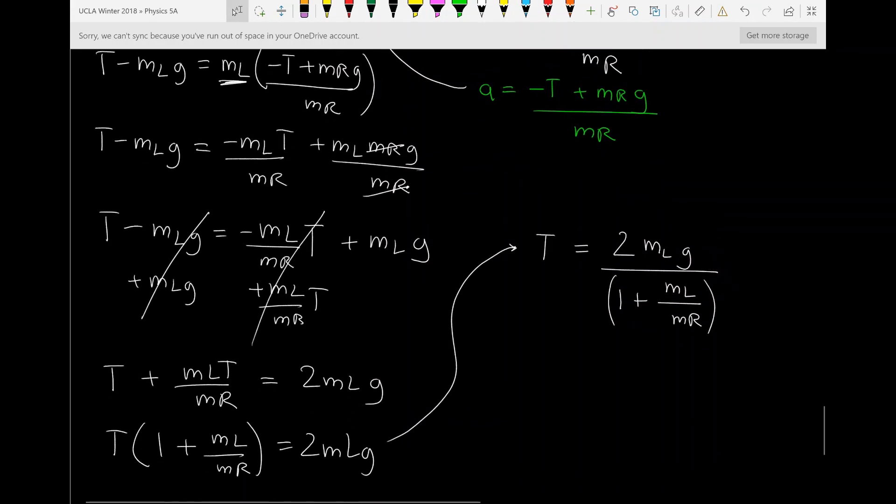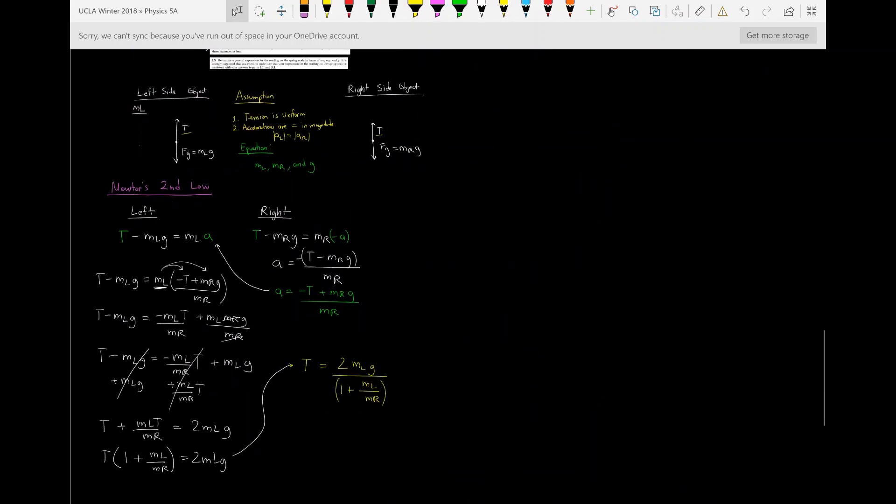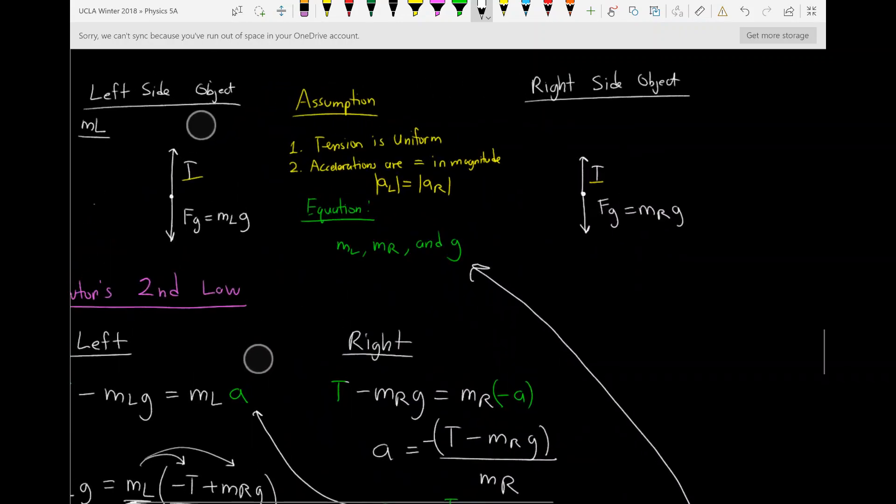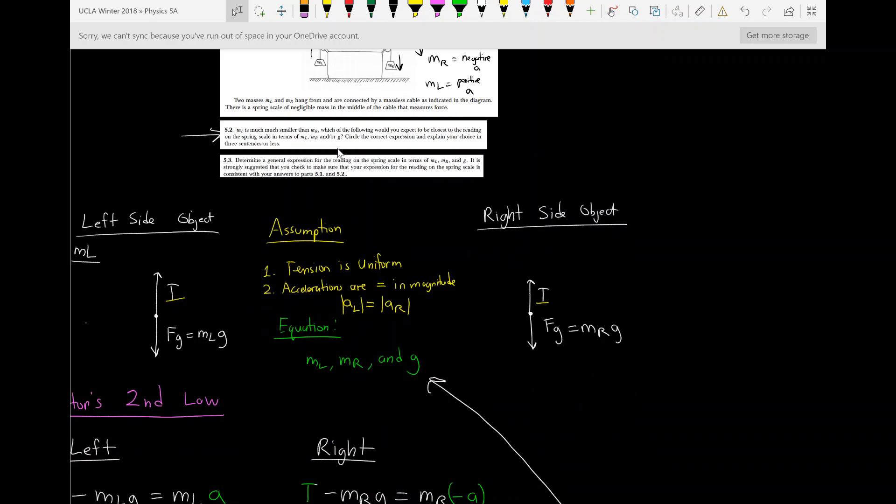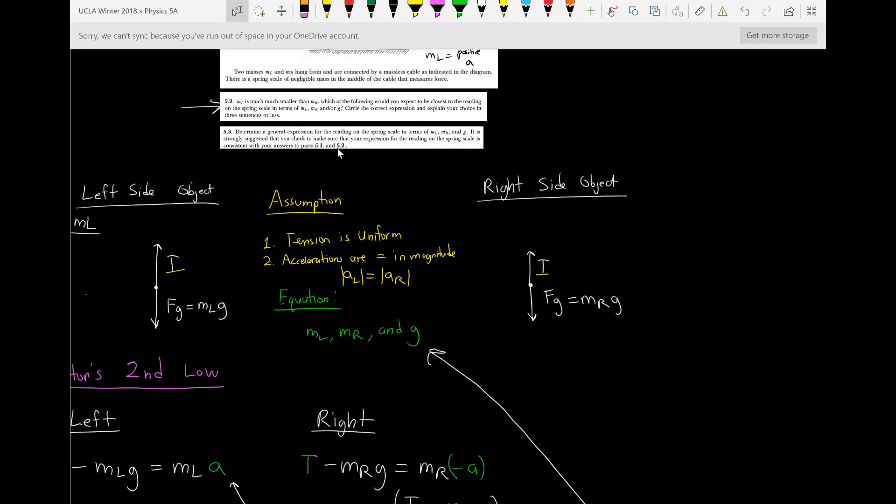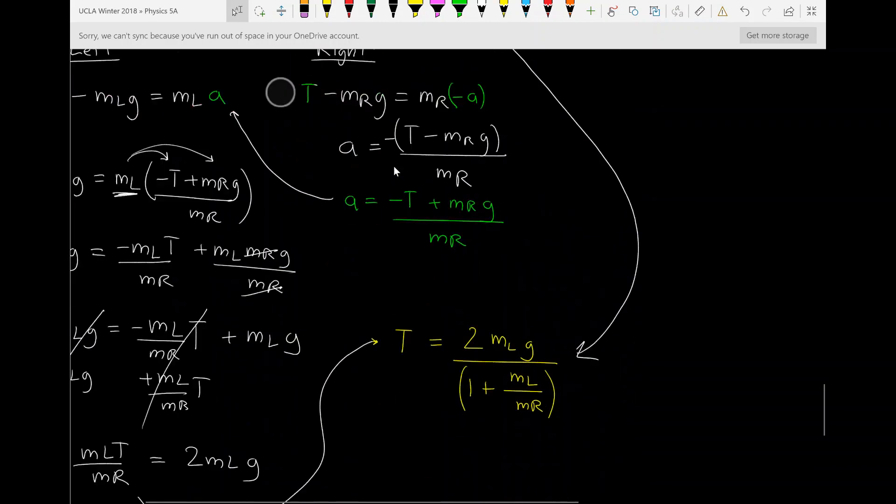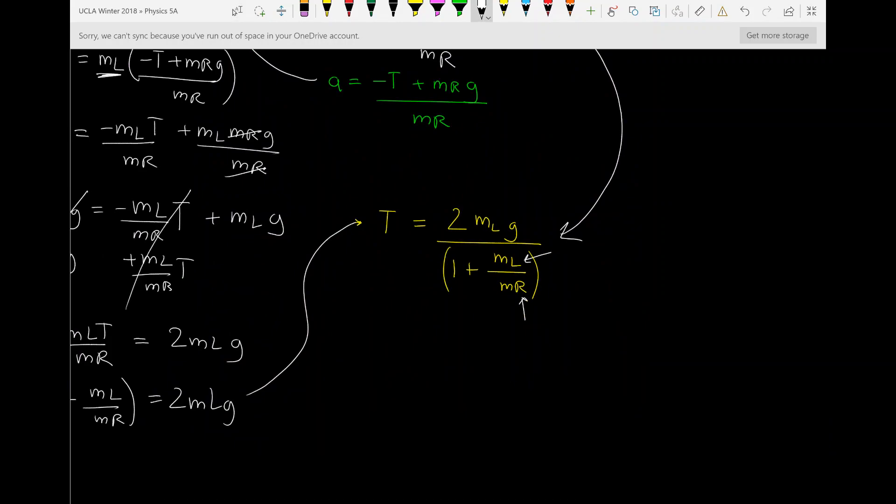So now we have an equation that only has the variables we are interested in. You can see that this equation only has these variables in it. And it even goes along with the answer we gave. We can see that 5.2 is asking if ML is much smaller than MR, which of the following would you expect to be the closest reading on the spring scale? Well, if we look at this problem, if MR is really big and ML is really small, this bottom portion right here is just going to approach one, because this part is going to approach zero.